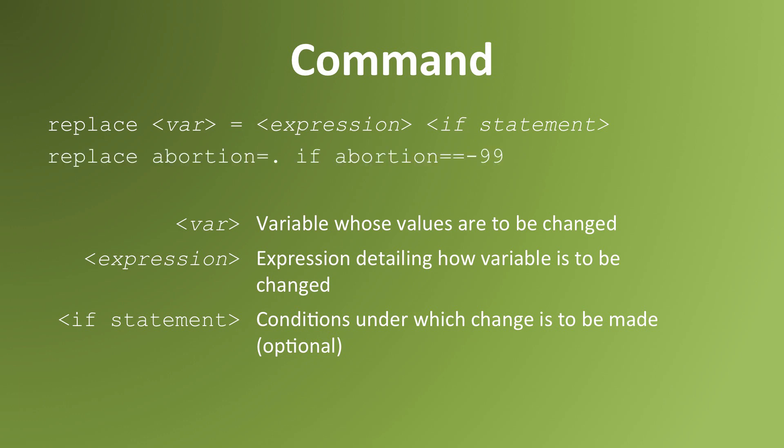In this example, I am asking Stata to make the abortion variable missing if it is currently equal to minus 99. The expression gives what the new variable value will be — what you're trying to change variable values to. The if statement gives the conditions under which those variables will be changed. So in this example, only abortion values that are equal to minus 99 will be changed. All other values will be ignored.